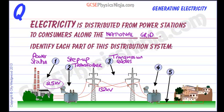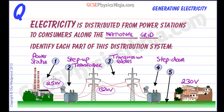When we reach a town or area where we want to supply electricity to, we then use a step-down transformer. That's going to take the voltage down to 230 volts, which is safe to use in houses. If we were to use these high voltages in houses, it would be unsafe and we may get electrocuted — sparks would be flying.